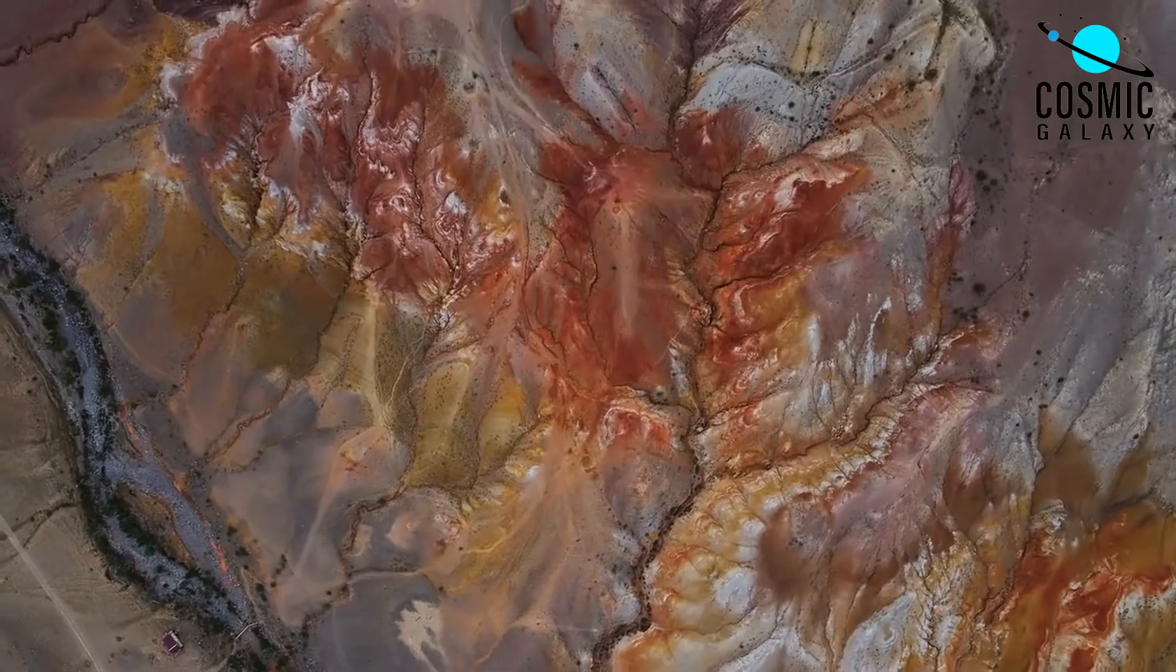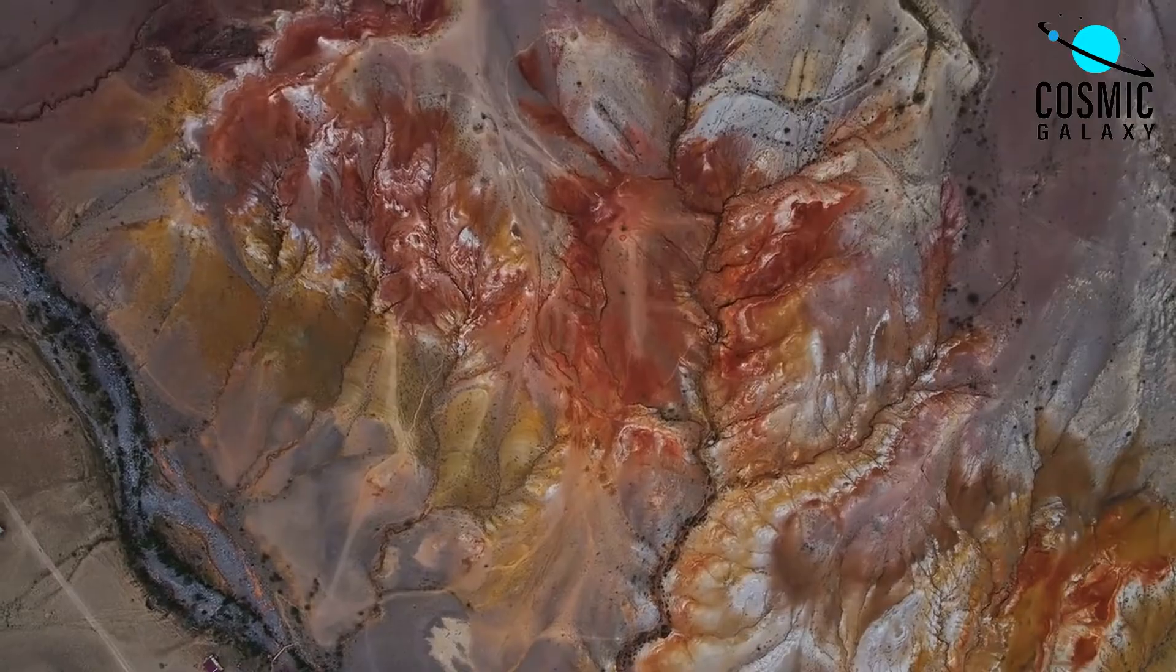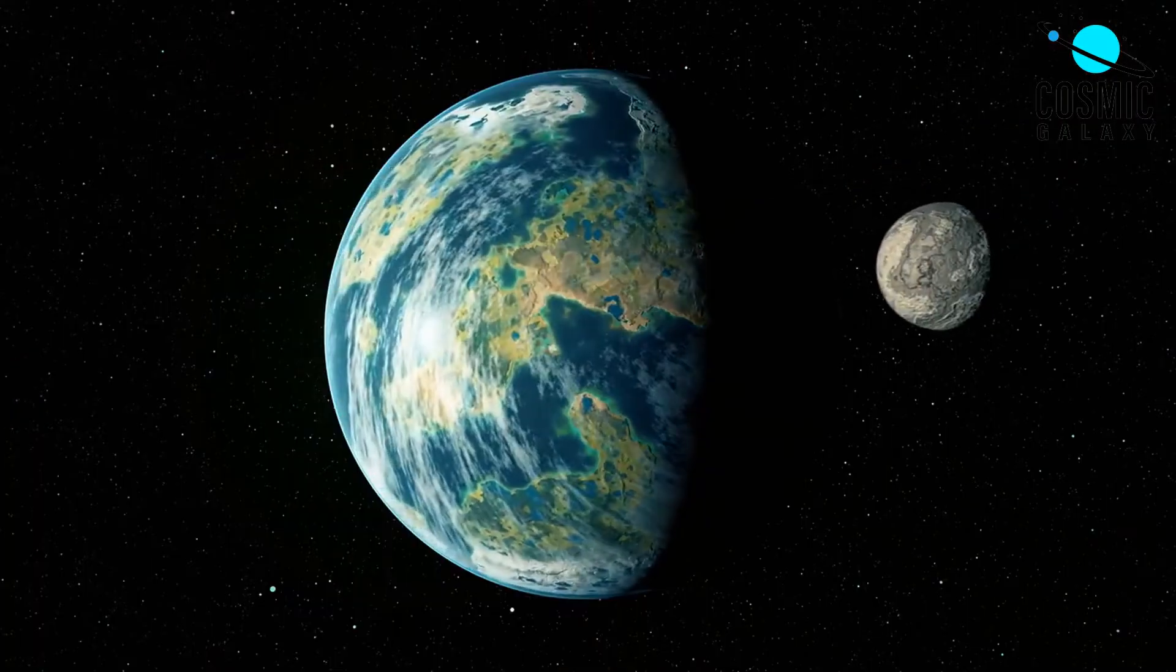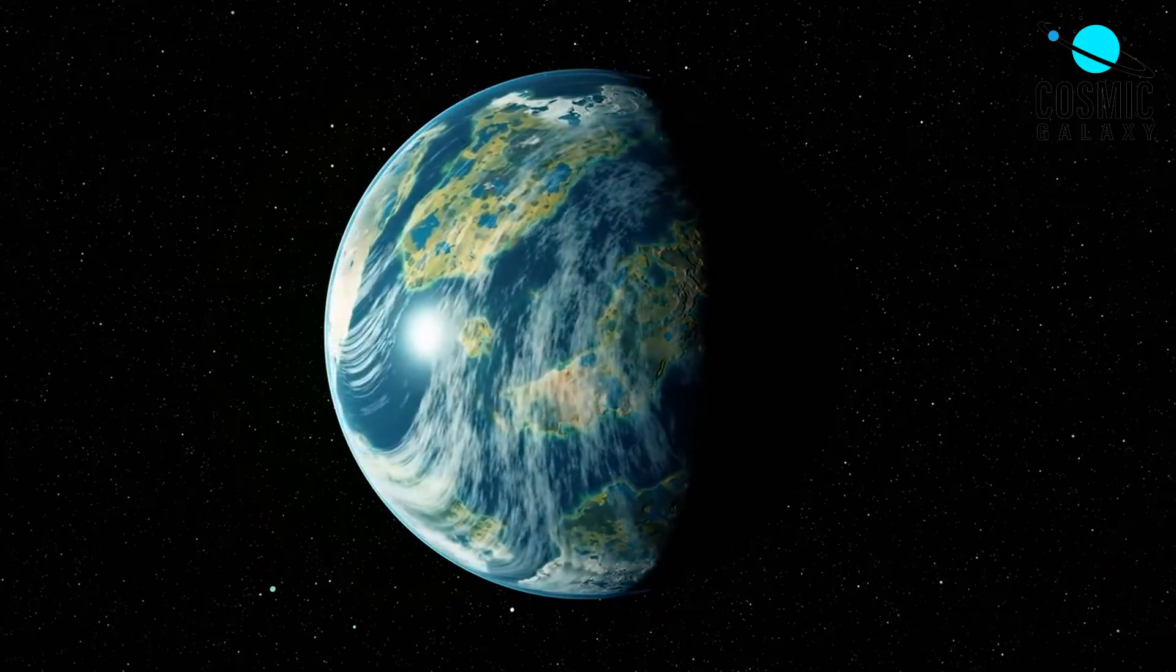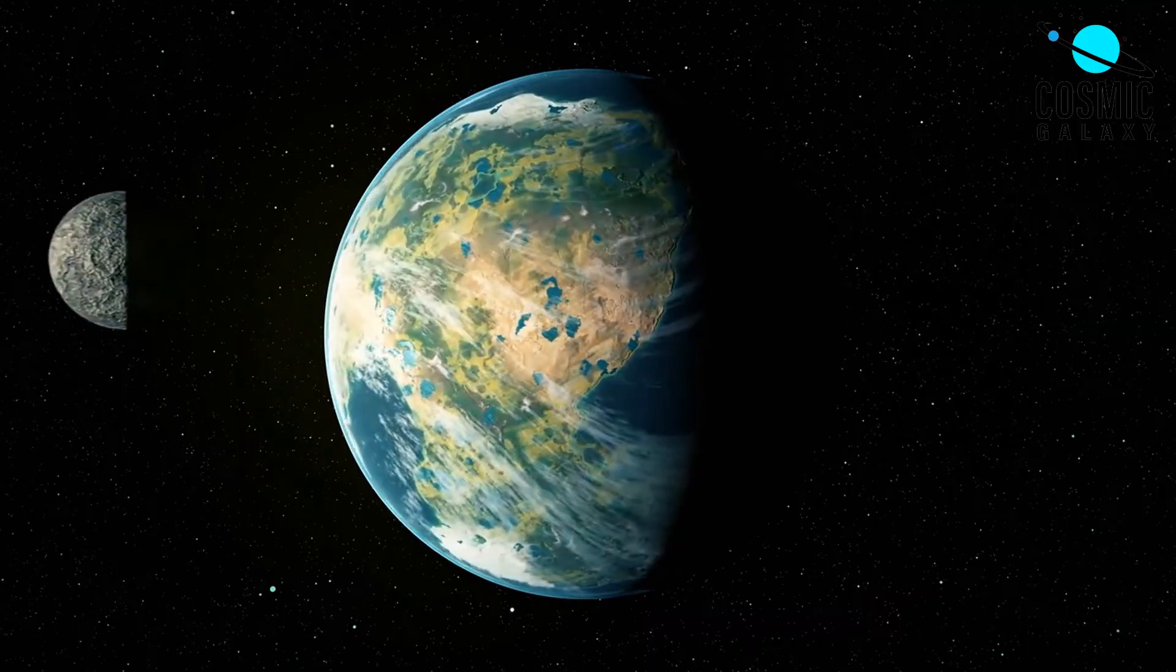In summary, rocky planets are primarily composed of rock and metal due to a process known as planetary differentiation. The four inner planets of our solar system are all rocky planets, while the gas giants are predominantly composed of gas and icy materials.